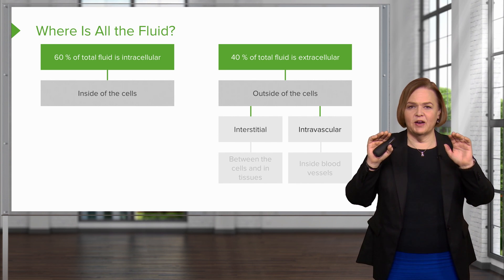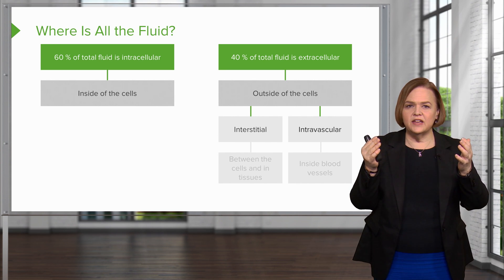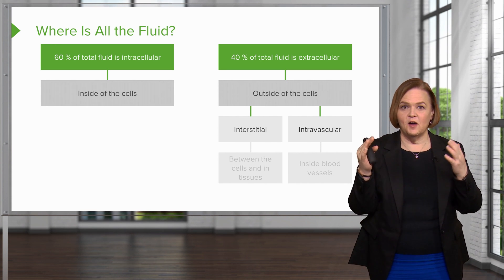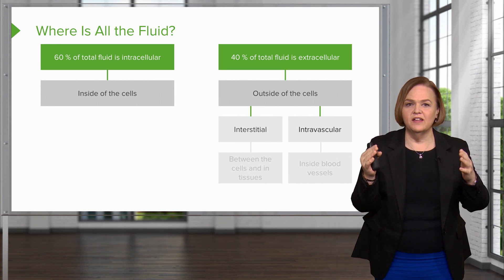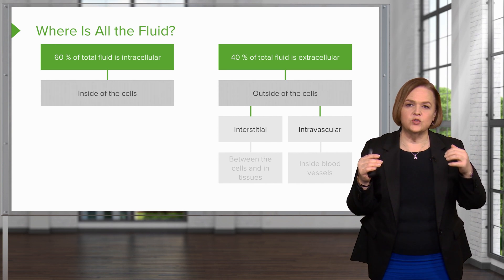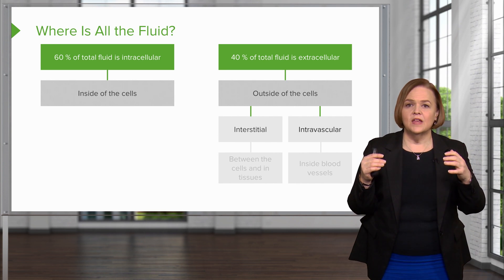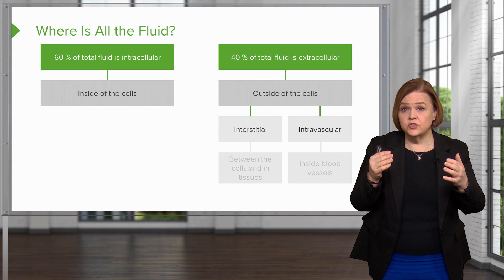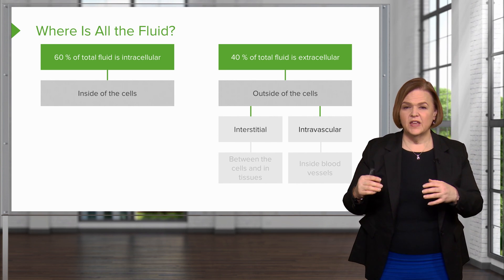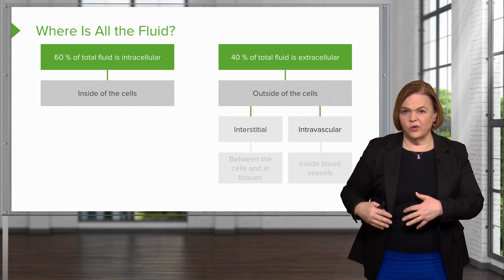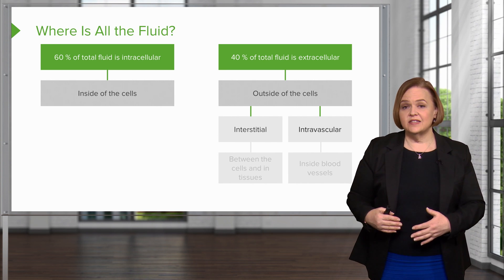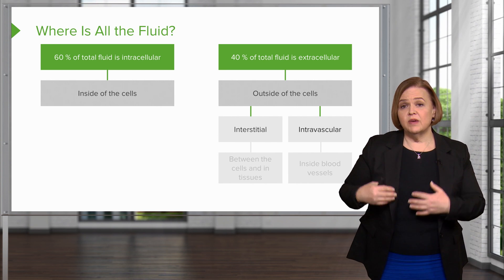Start with the green boxes. If we're asking where fluid is, first it's either inside the cell or outside the cell. Inside the cell, we call that intracellular. Outside of the cell, we call that interstitial or intravascular. Interstitial is kind of like all around my tissues and my cells.